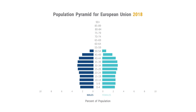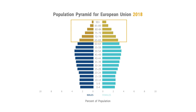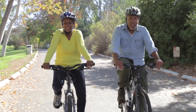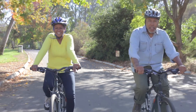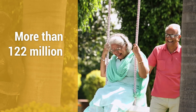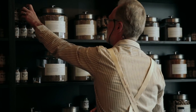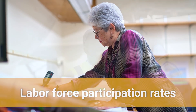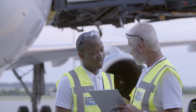In the European Union, the proportion of the population ages 65 and older is expected to increase from 20 percent in 2018 to 30 percent in 2050. Between 2016 and 2050, the number of pensioners ages 65 and older is expected to increase from just under 83 million to more than 122 million. As population aging continues, older adults' labor force participation rates remain a key consideration for social and economic policies.